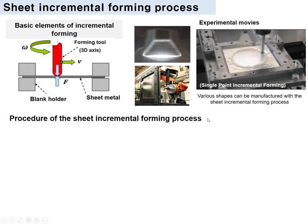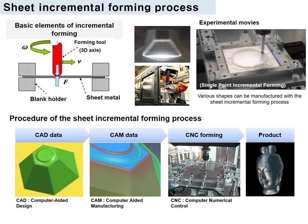The procedure of the sheet incremental forming process is shown in the figure. First, the CAD data is generated from the CAD program. After that, the tool path is generated through the CAM process. Using the generated G-code, the sheet is formed in the three-dimensional CNC machine. The sheet incremental forming process is a CNC-based forming technology similar to 3D printing.